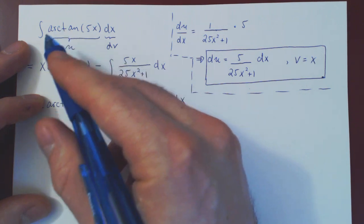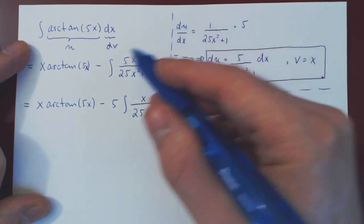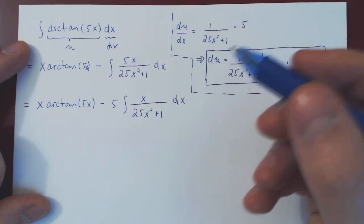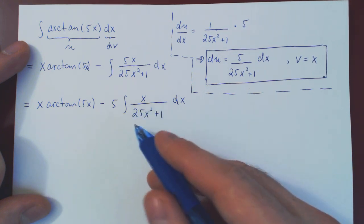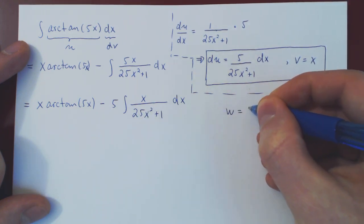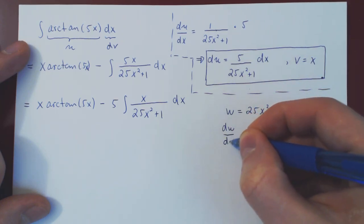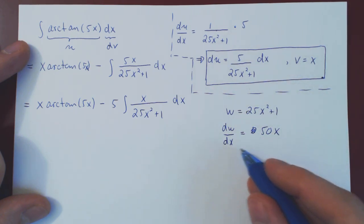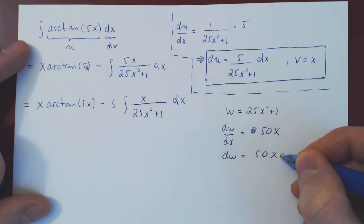Now, we've already used u for arctangent. Of course, as this is still a function of x, we could ignore by parts and use u again. Just to, for the fun of it, I'll use a different variable. I will let w be our denominator. Differentiate w with respect to x, and you'll get 2 times 25 is 50x. Multiply by dx. So dw equals 50x dx.